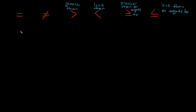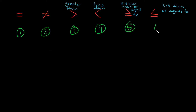Like I said, we have six symbols total. So what we're gonna do for all these examples — I'm gonna write down two numbers or two quantities, and then we're gonna use one of these symbols to compare them. It's gonna make a lot more sense once we jump into these examples.